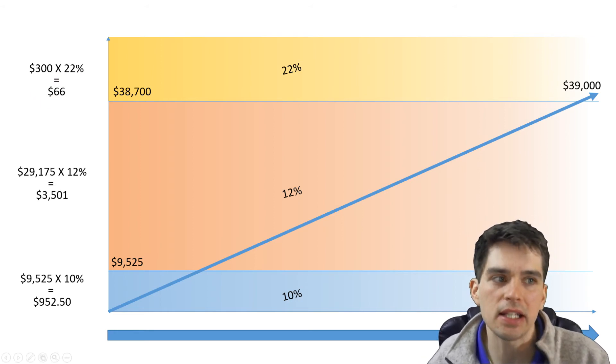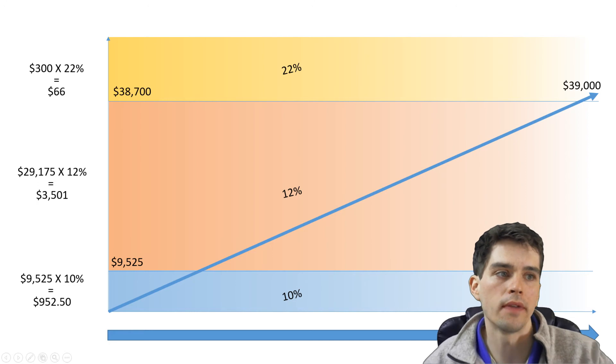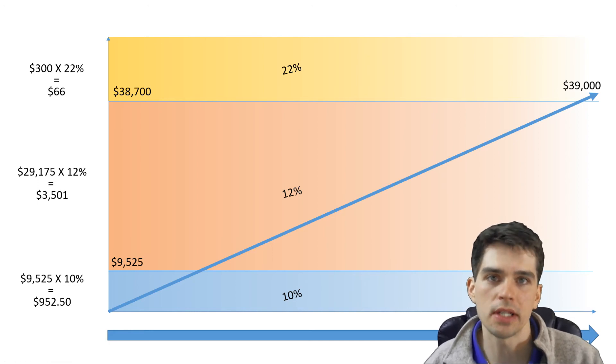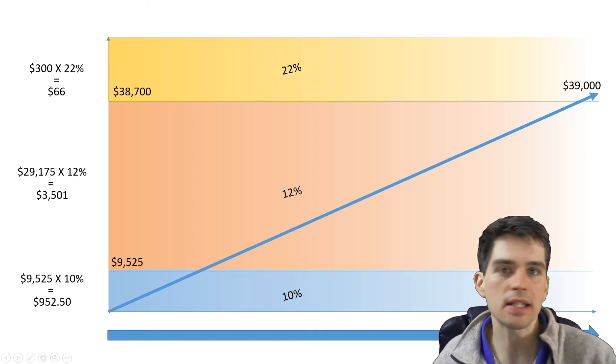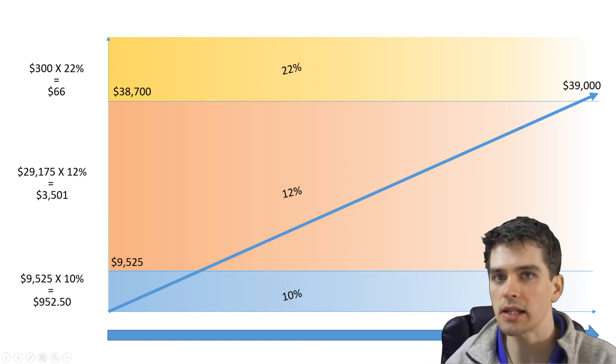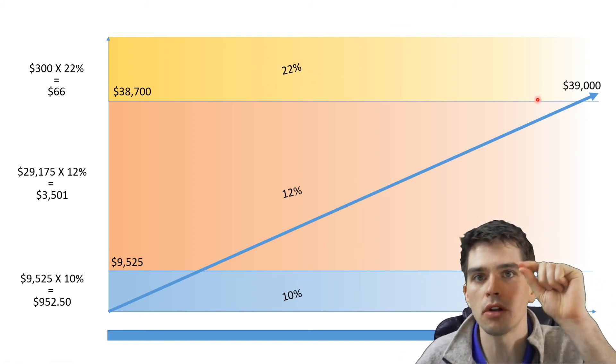You'd be surprised. I think less than half of Americans know that our tax system is a marginal system. You always hear about what tax bracket are you in. That doesn't say anything about how all of your money is taxed. That just tells you about your marginal income.